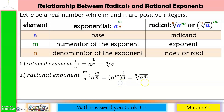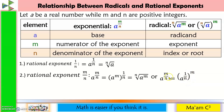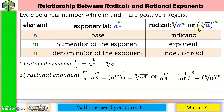We can also express a raised to m over n as the quantity a raised to 1 over n, raised to m. Again, applying power of a power, multiplying the exponents gives m over n. The denominator becomes the root, so this is the nth root of a raised to m.